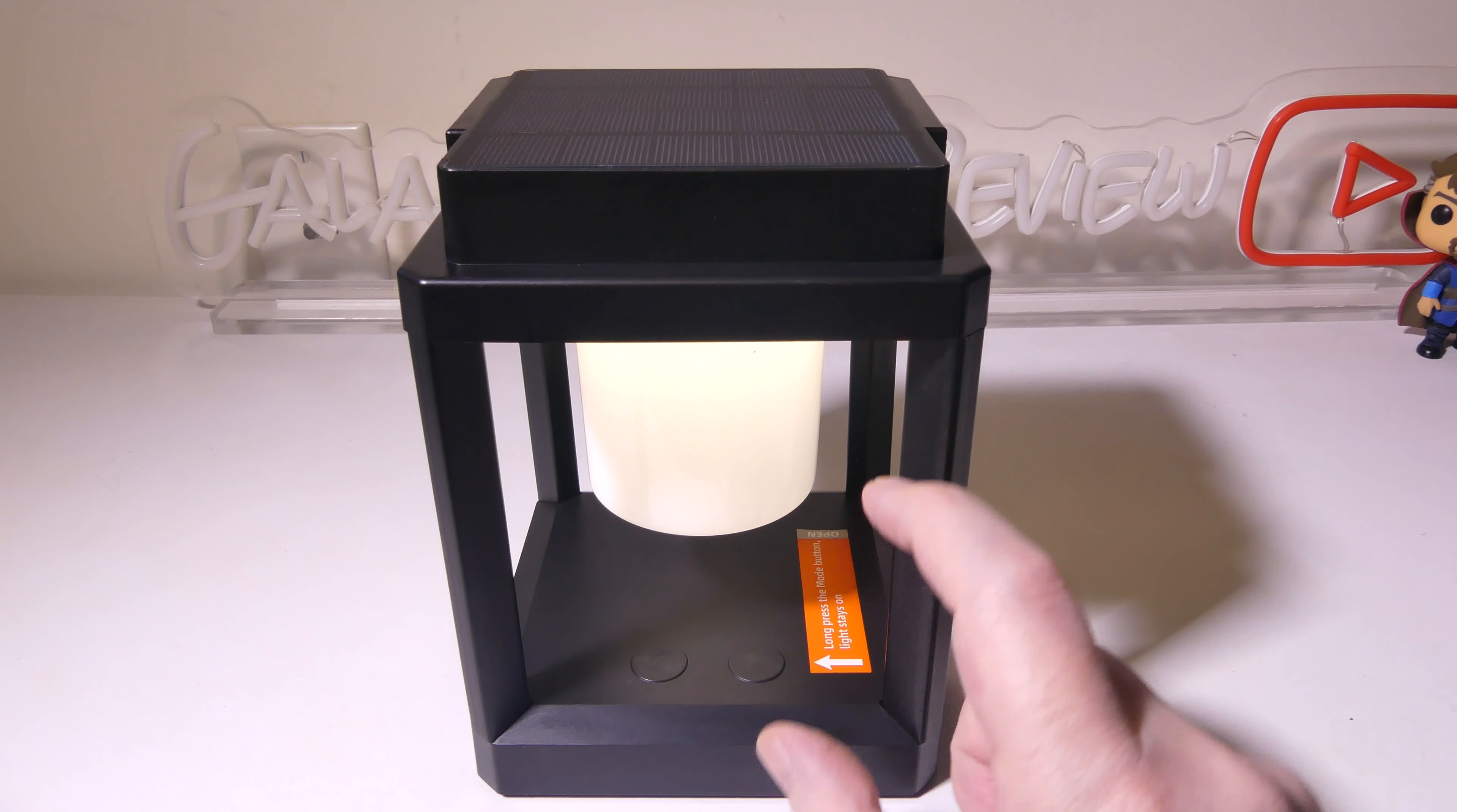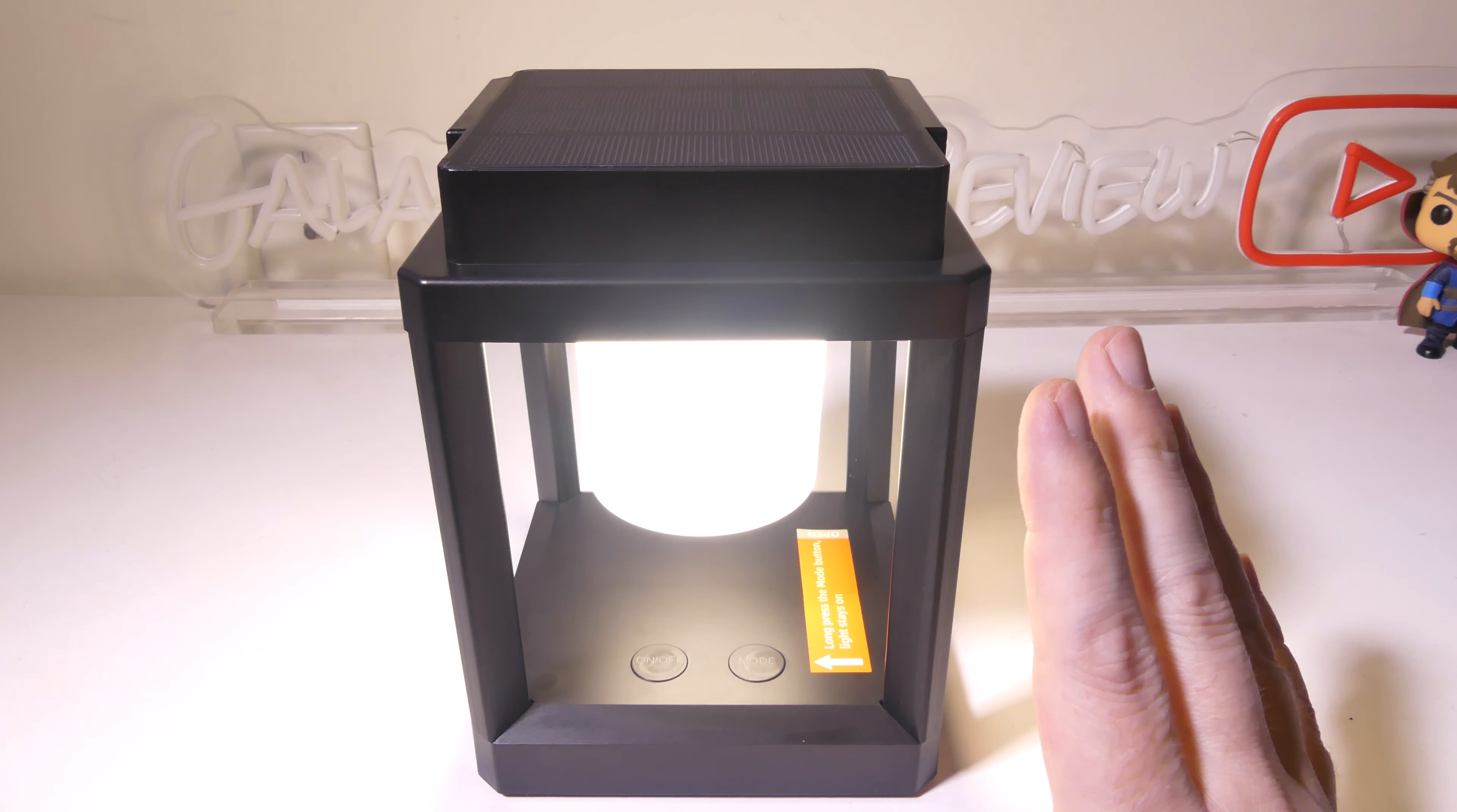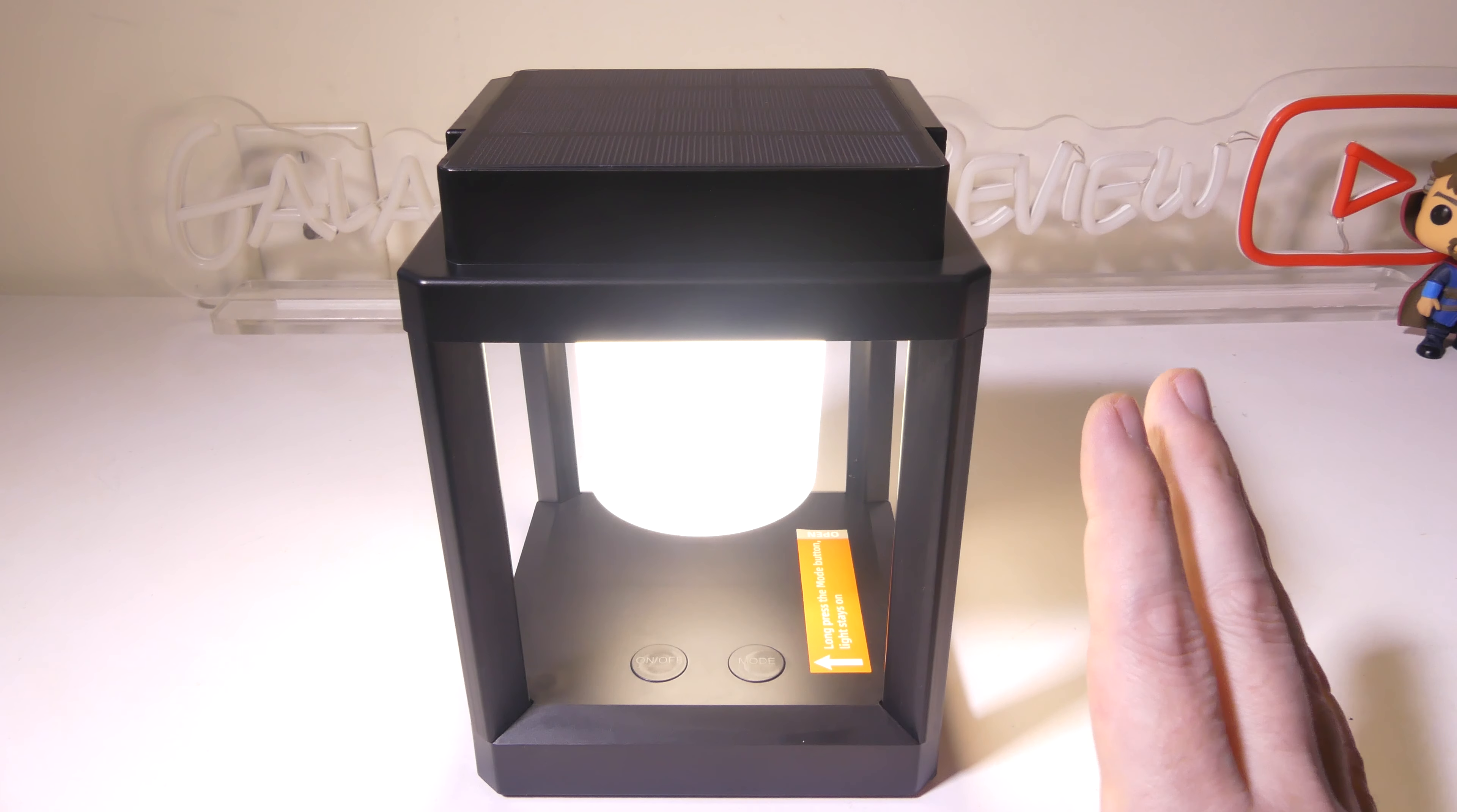You can hit it once and hold it and when you hold the on and off switch, you have three levels of brightness, 25%, 50%, or 100%. So, tapping it will turn it off and put it into sensing mode and holding down the on and off button will change your three levels of brightness. So, it's a pretty simple operation here.